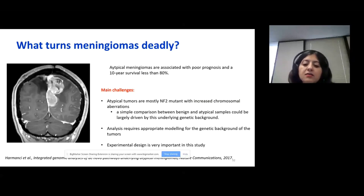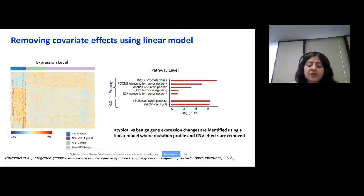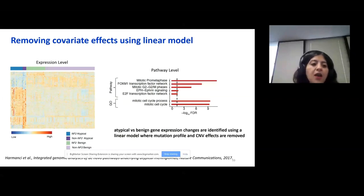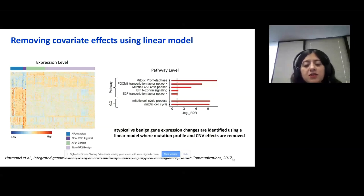These observations were important in designing our experiments because the main challenge is that a simple comparison between benign versus atypical samples could be largely driven by the underlying genetic background — atypical tumors are mostly NF2 mutant and have increased chromosomal aberration. So for gene expression analysis, instead of a simple atypical versus benign comparison, we did a linear model where mutation profile and CNV effects are removed. The results showed increased expression of cell cycle genes in atypical meningiomas, as well as abnormal FOXM1 and E2F transcription factor network gene expression, indicating increased proliferation.